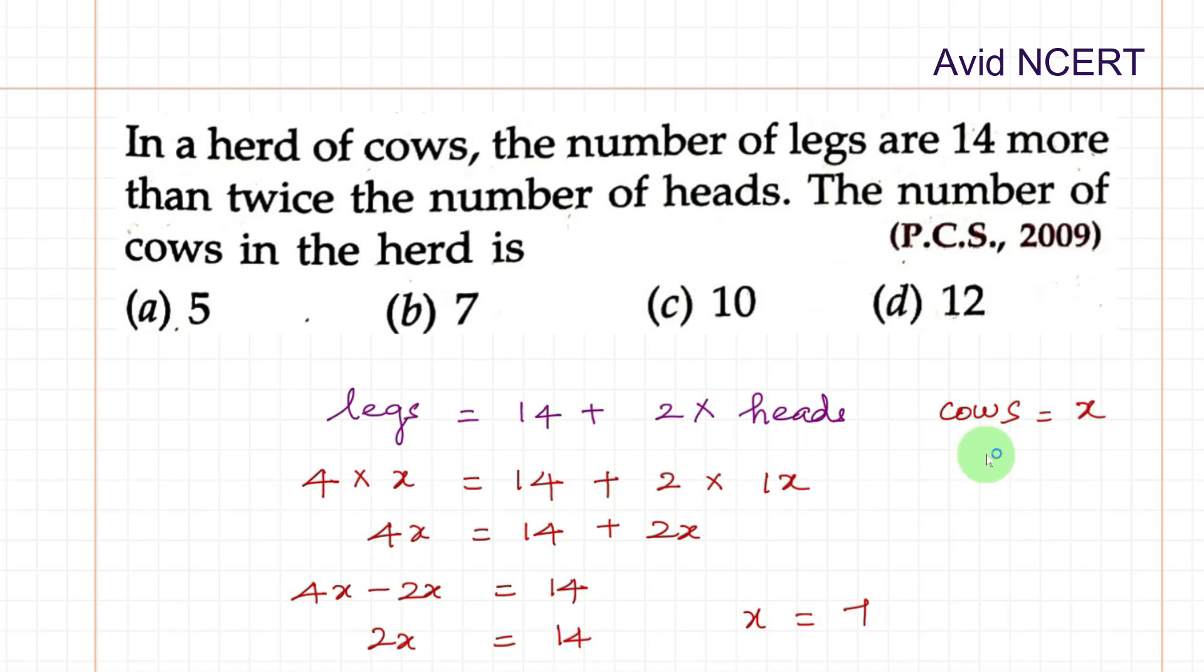Therefore, the number of cows in the herd is 7. Thanks for watching. If you have any doubts, please let me know in the comments.